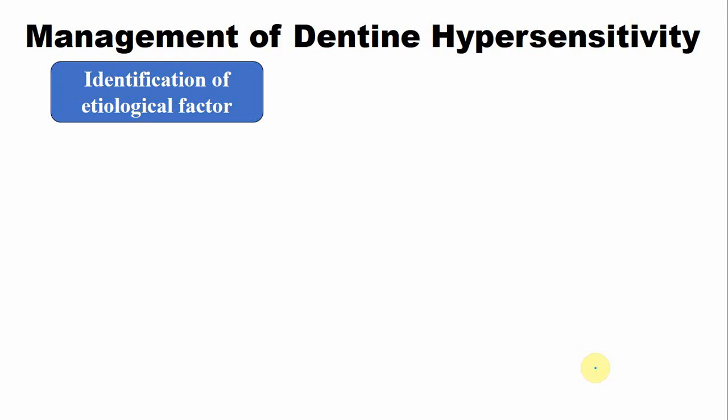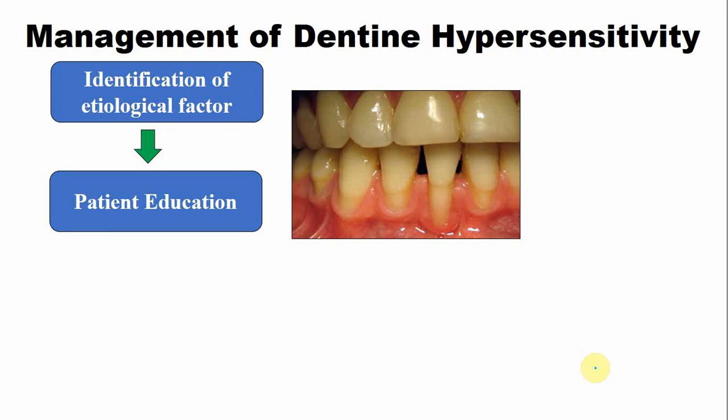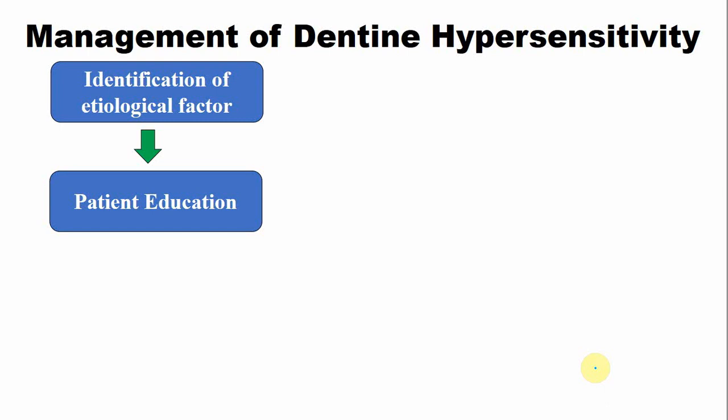After identifying the etiological factor, the second step is patient education, which is very important for successful management. For example, when the cause is gingival recession due to improper tooth brushing, it is important to explain the cause to the patient, encourage them to modify their oral hygiene method, and empower them with the correct brushing technique.